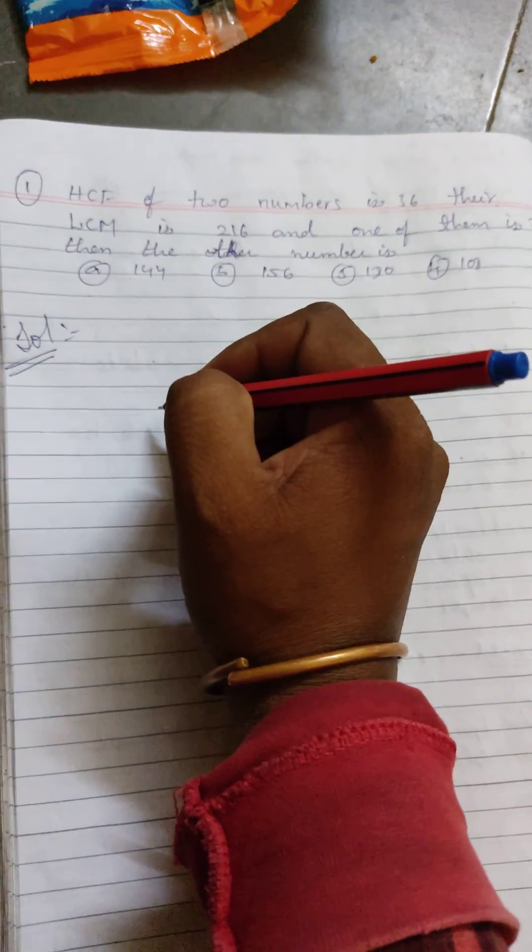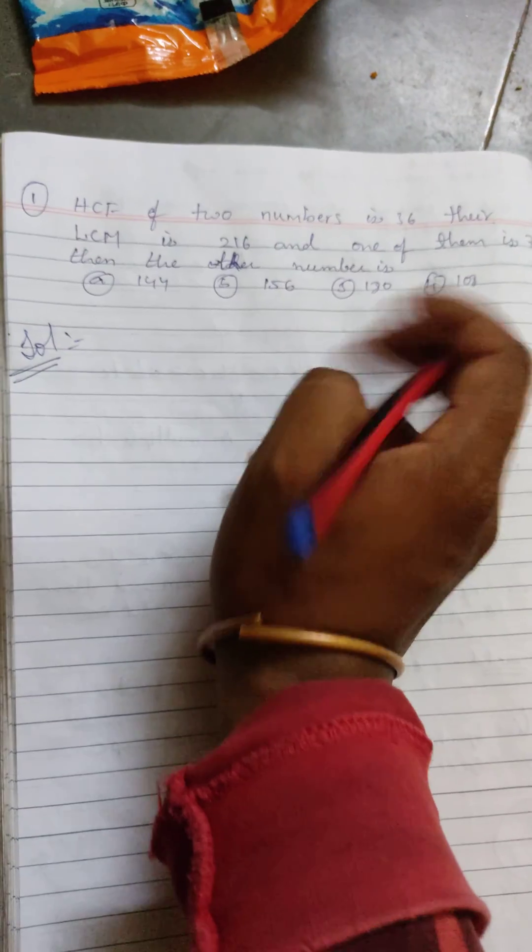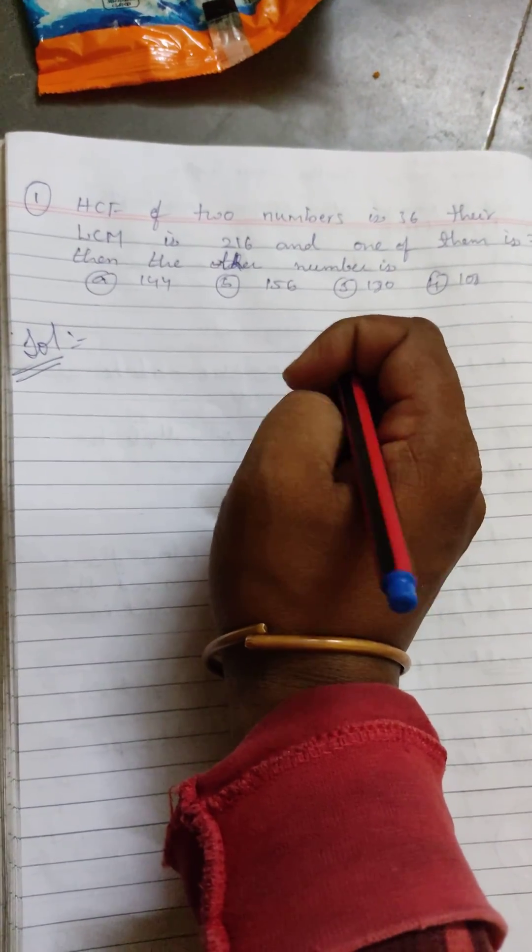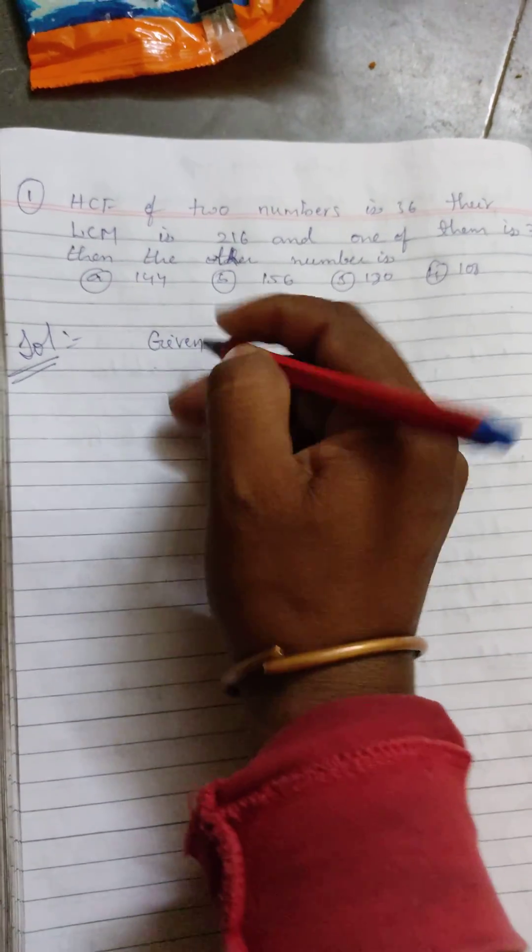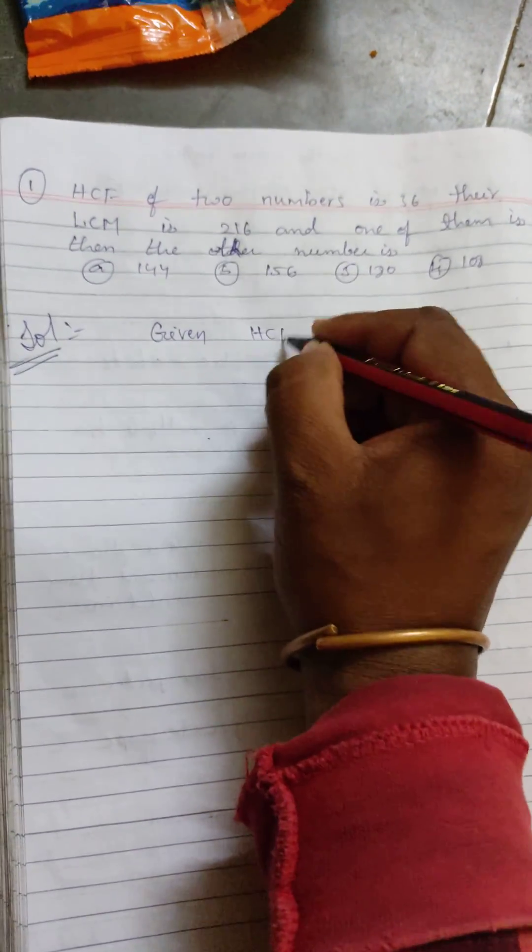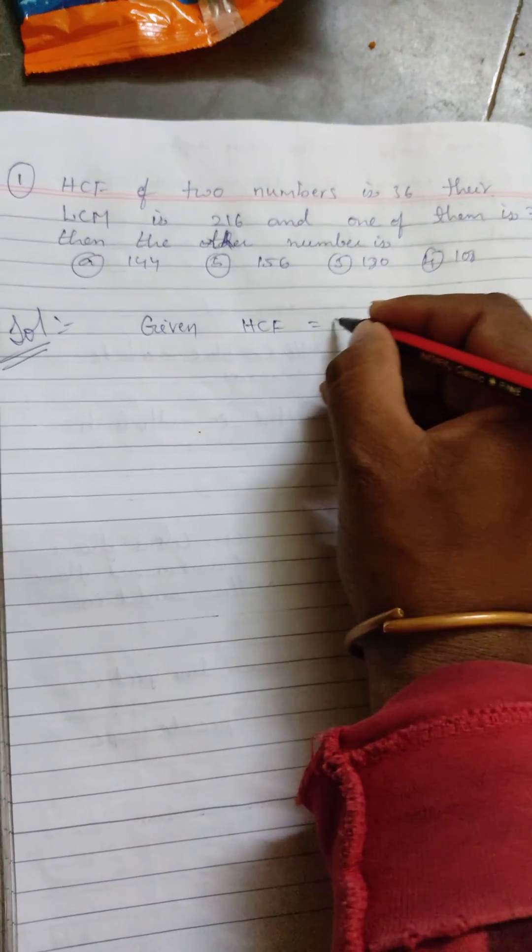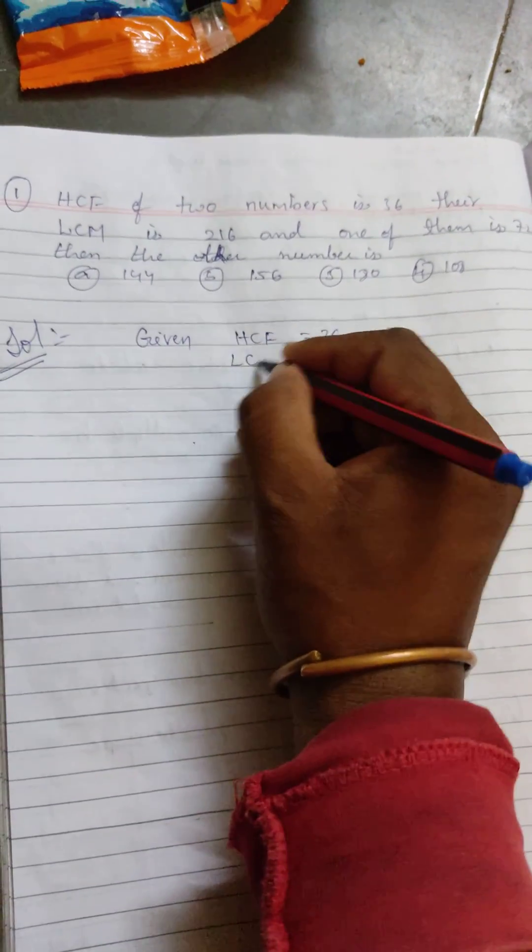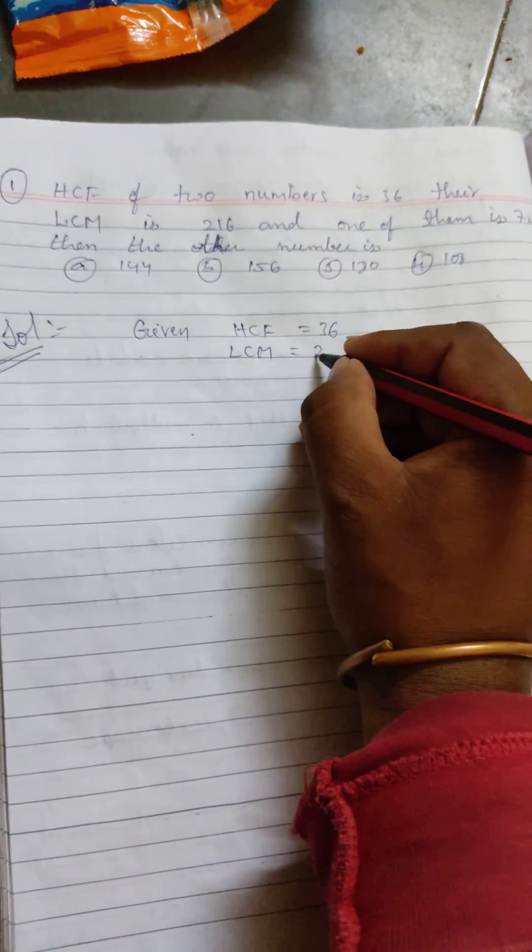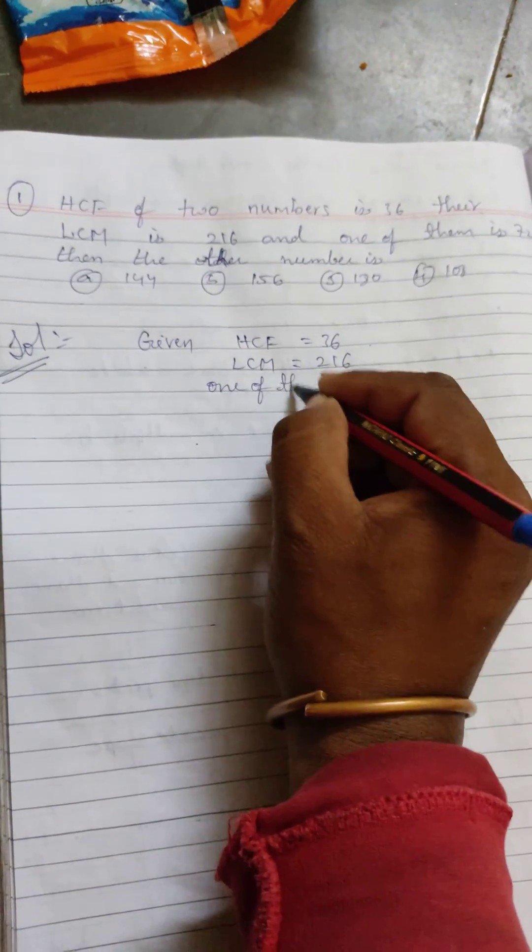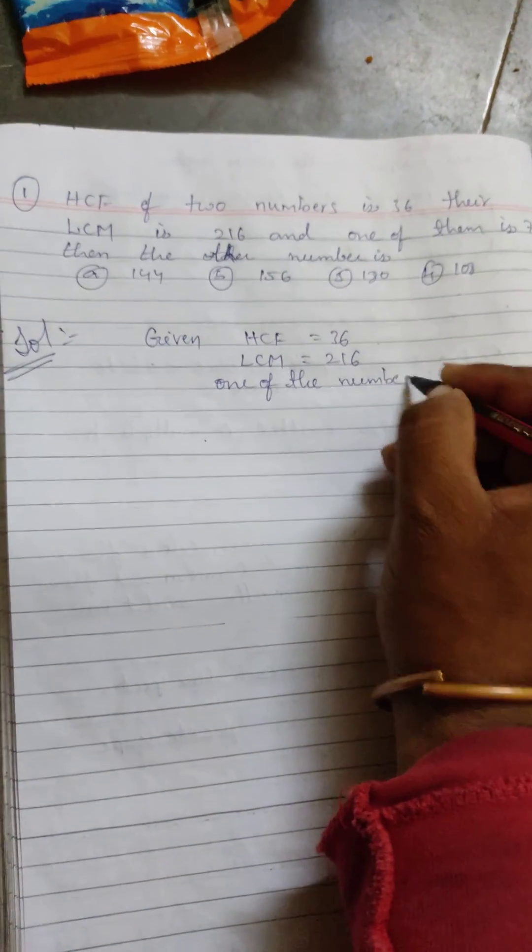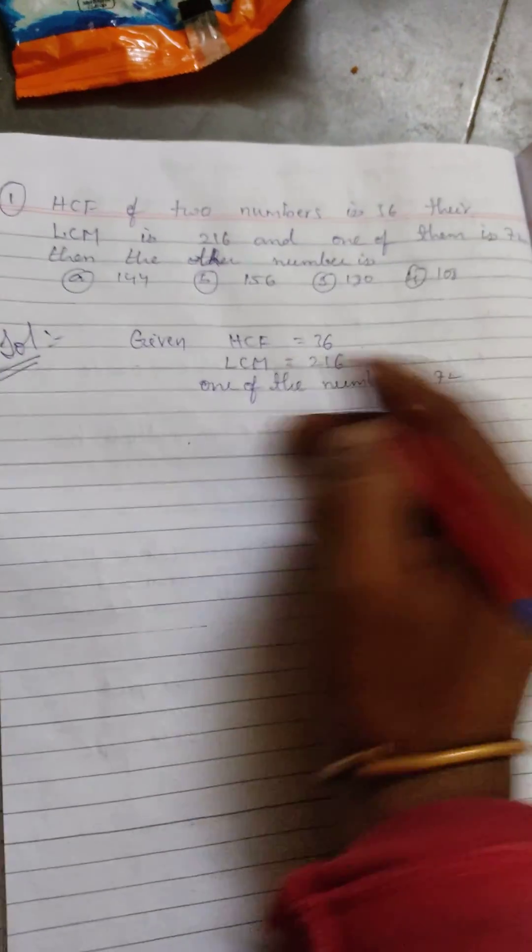I will say first one, given. I will write HCF is 36, LCM is 216, one of the number, one of the number is 72.